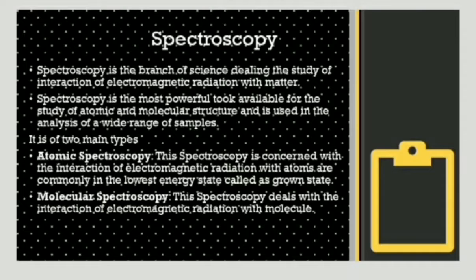Spectroscopy has two main types: atomic spectroscopy and molecular spectroscopy. In atomic spectroscopy, it deals with the interaction of electromagnetic radiation with atoms, commonly in the lowest energy state which is known as the ground state. In molecular spectroscopy, it deals with the interaction of electromagnetic radiation with molecules, because molecules and atoms are of different states and both comprise different excitation states.